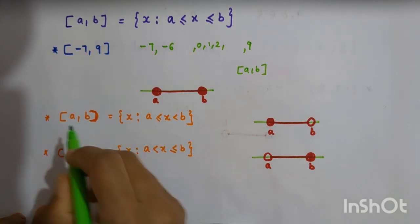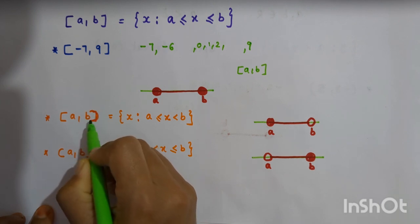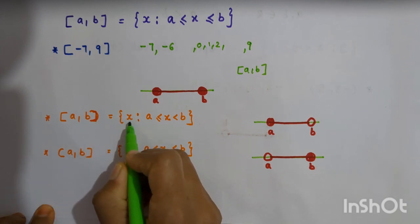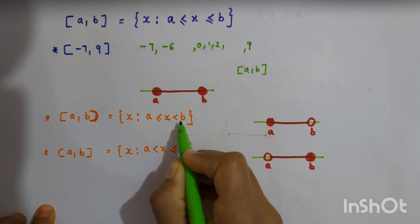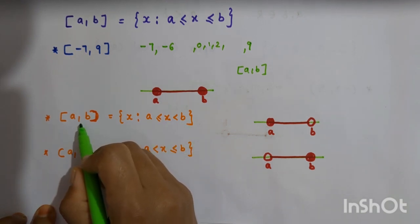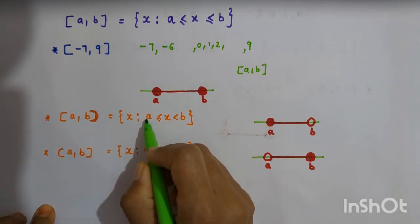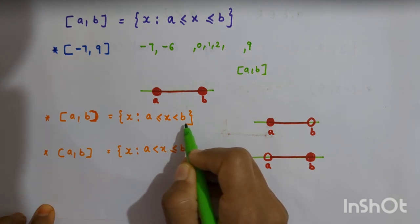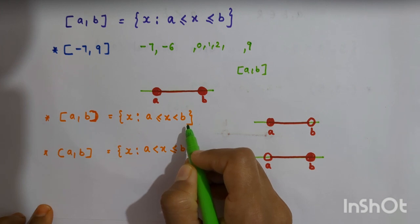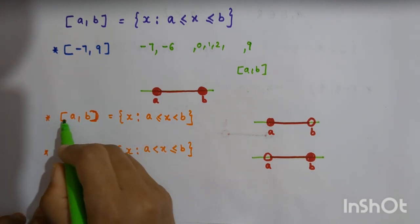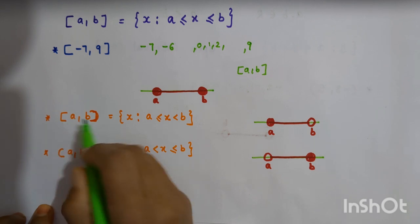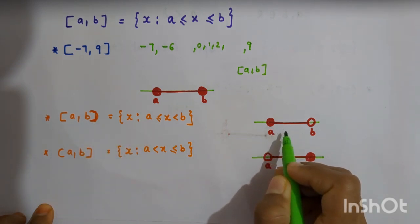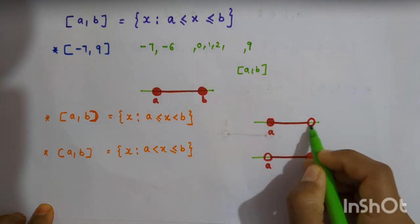We can also have intervals closed at one end and open at the other. One such interval is closed at the left end and open at the right end. It is defined as the set of all x such that a ≤ x < b. In this interval we include the left endpoint a but exclude the right endpoint b. On a real number line, a is included (shaded) and b is not included (open circle).